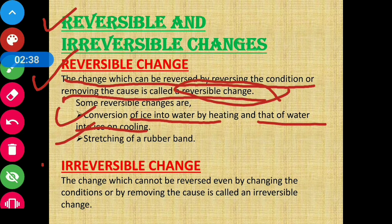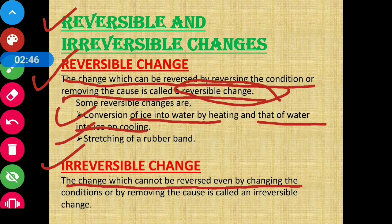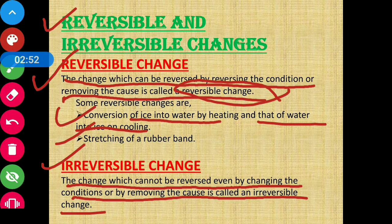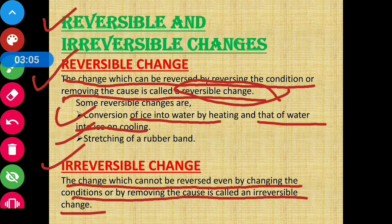Next comes irreversible change. The change which cannot be reversed even by changing the condition or by removing the cause is called an irreversible change. Aise changes jinko dubara se reverse nahi kiya ja sakta — conditions ko change karke bhi, unke cause ko hataake bhi — original form dubara nahi aa sakta — those are called irreversible changes.